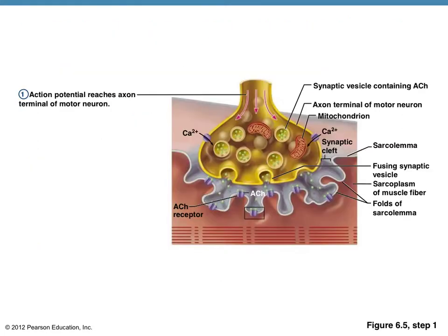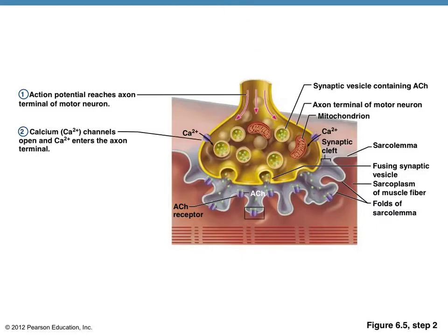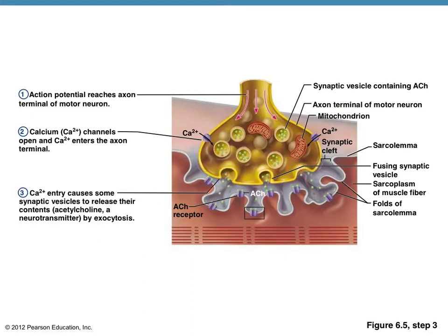Now we're going to review this process with a diagram. The first thing occurring is the action potential coming down the neuron, reaching the axon terminal — the end of the motor neuron. In response to that action potential reaching the axon terminal, the calcium ion channels open up, and calcium floods into the axon terminal. The calcium ions flooding in there stimulates the release of the ACH.